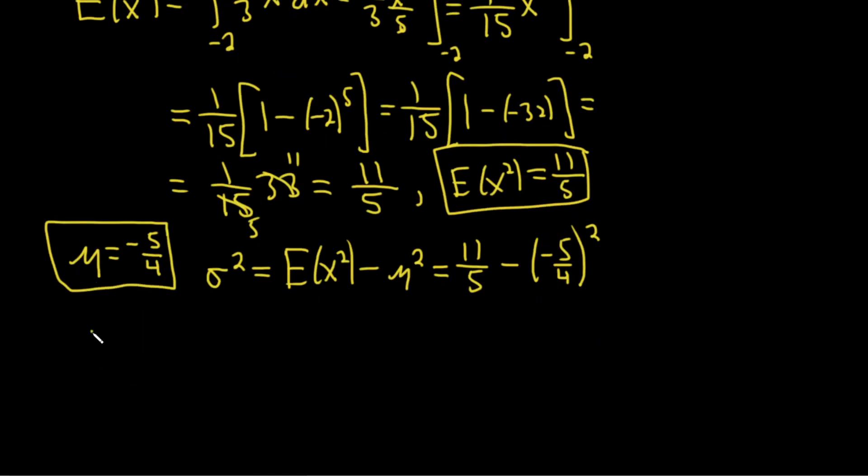So σ squared equals 11 fifths minus 25 over 16. We need a common denominator. Multiply 5 and 16 to get 80.